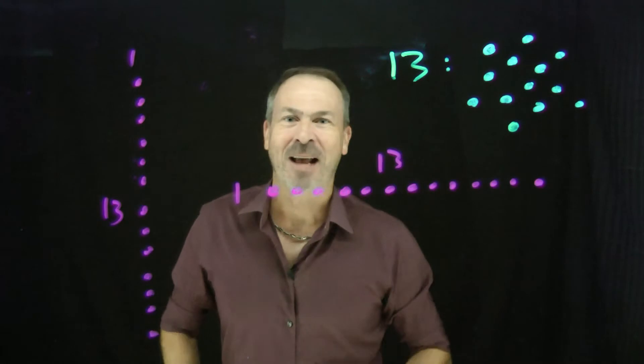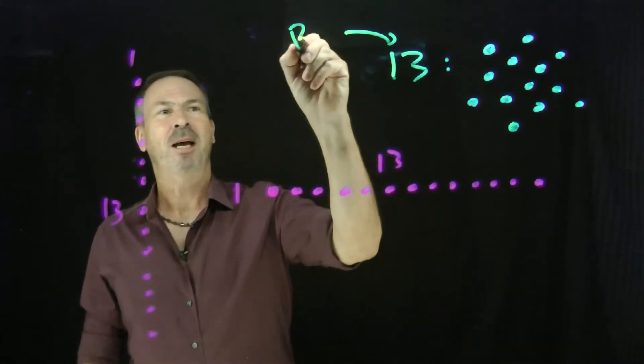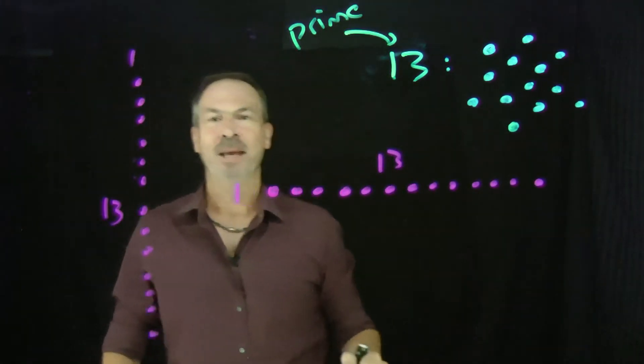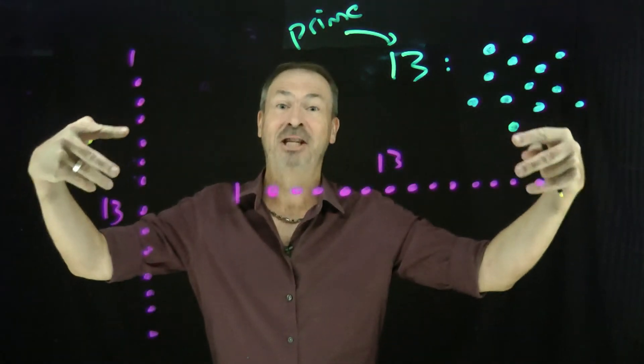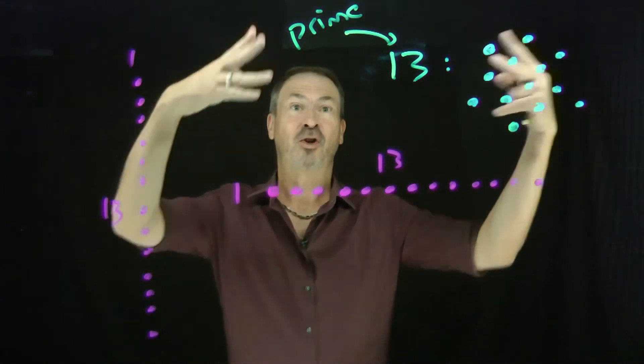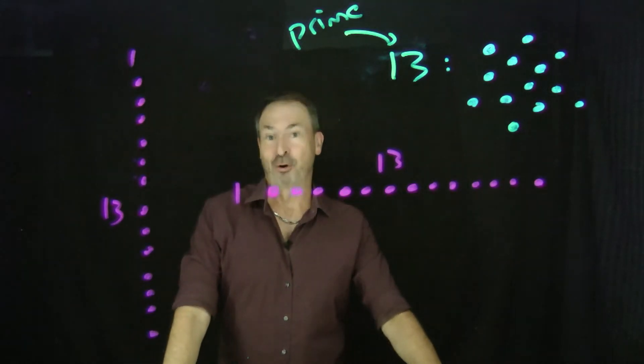Okay. So the word for an obstinate number like this is prime. Prime. A number is prime if with that count of dots, you can only make these basic degenerate rectangles. So 13 is an example of a prime number.